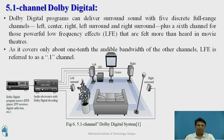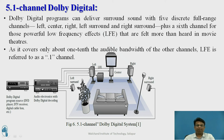A 5.1 Channel Dolby Digital program delivers surround sound with five discrete full-range channels: left, center, right, left surround, and right surround. Plus, it has a sixth channel for low frequency effects (LFE) more commonly heard in movie theaters. Since the LFE channel covers only about one-tenth of the audible bandwidth of other channels, it is referred to as a 0.1 channel. A DVD player or set-top box provides sound to a Dolby decoder, which drives the left, right, center, surround, and LFE speakers.